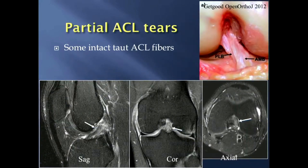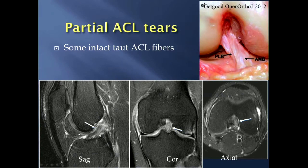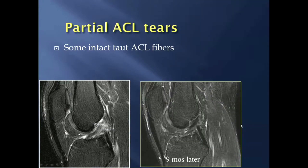Partial ACL tears imply that some intact fibers remain taut. These can be tricky, and sometimes the appearance overlaps with complete tears, requiring us to say there's a high-grade tear, possibly complete. Here's an example of an ACL that looked a little wavy with diffuse increased signal but no fluid gap — lacking one of the definitive signs. The same patient nine months later shows the ACL is healed. Complete ACL tears do not heal, but partial tears can, because intact fibers act as scaffolding.